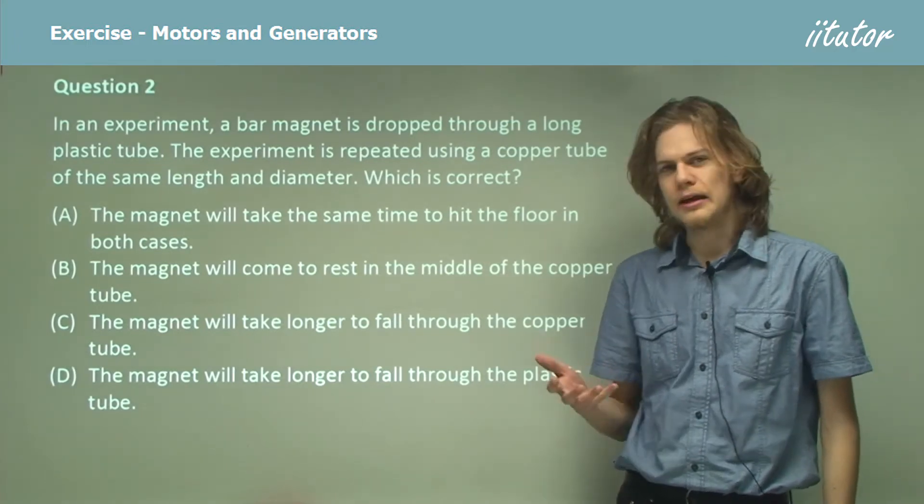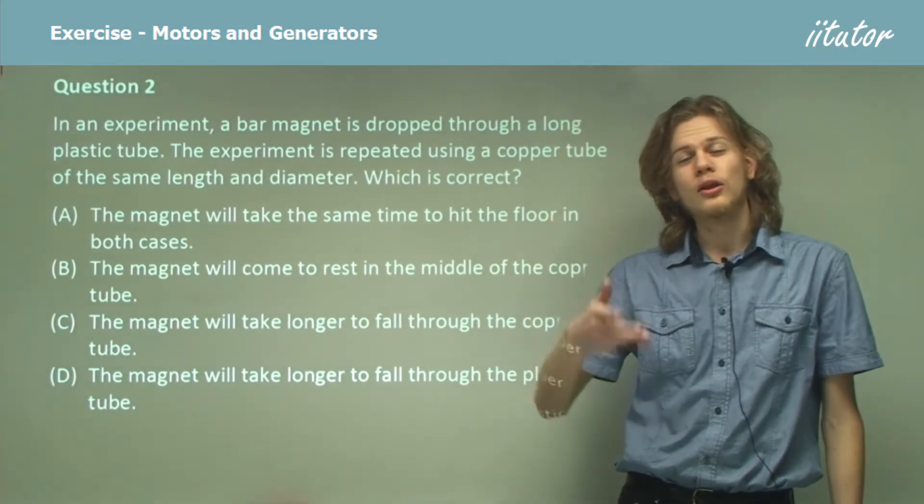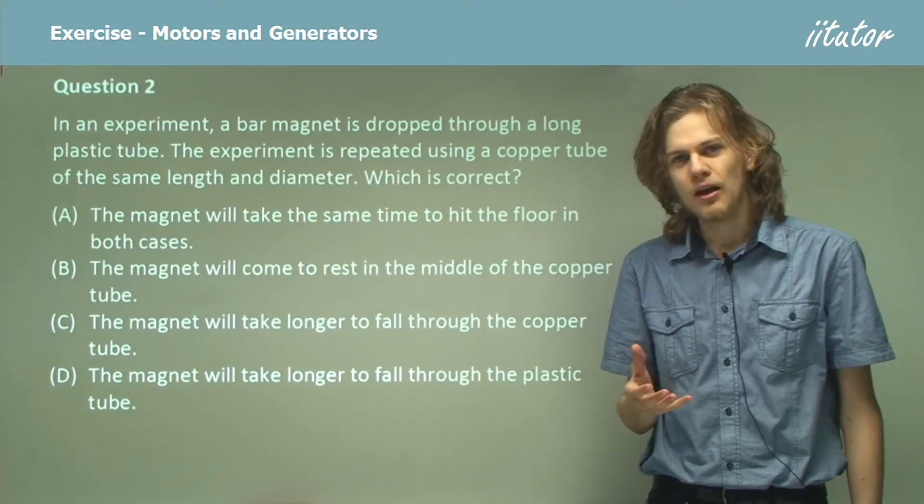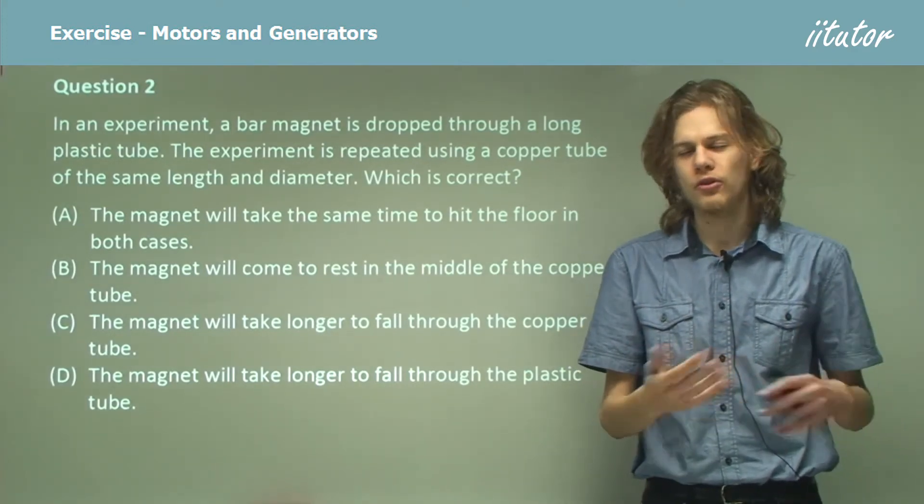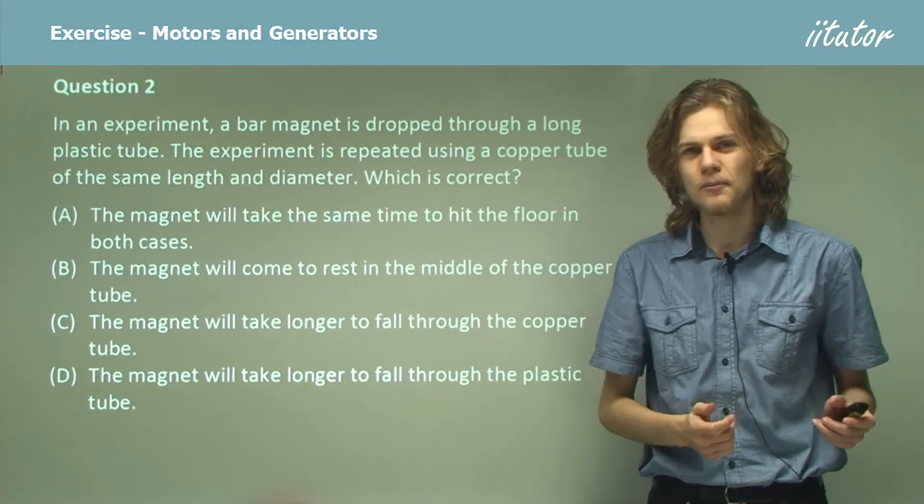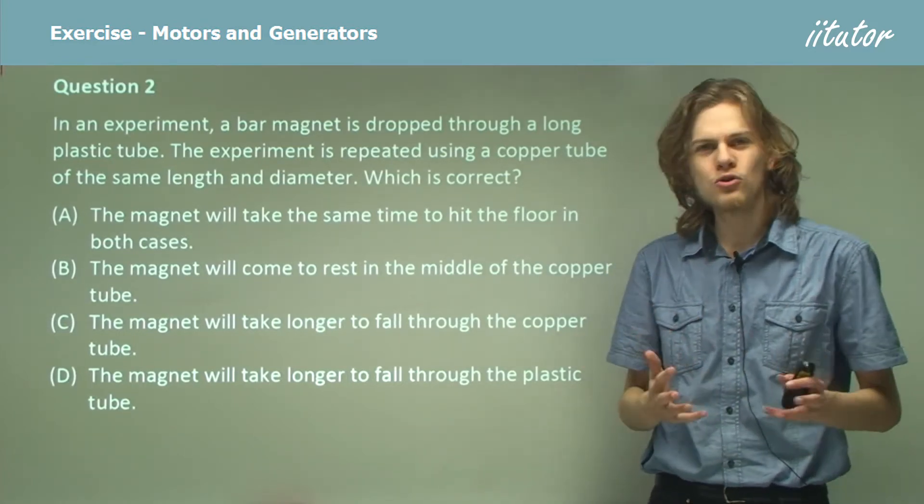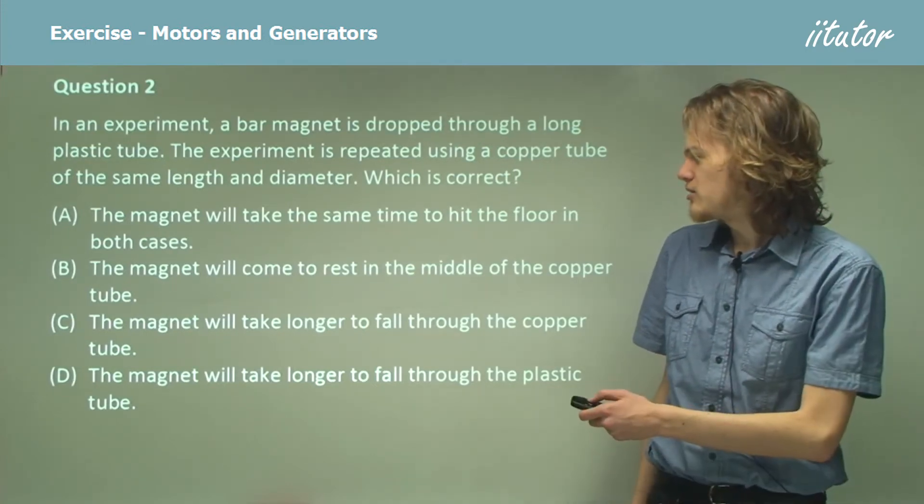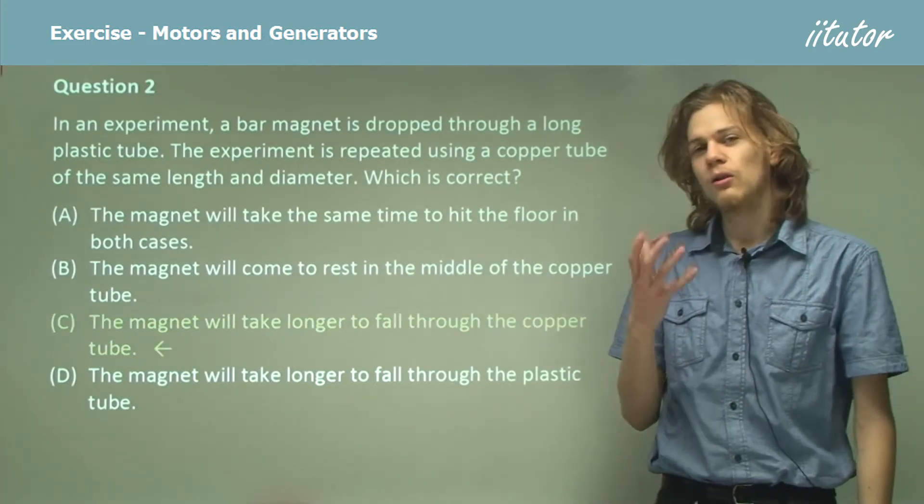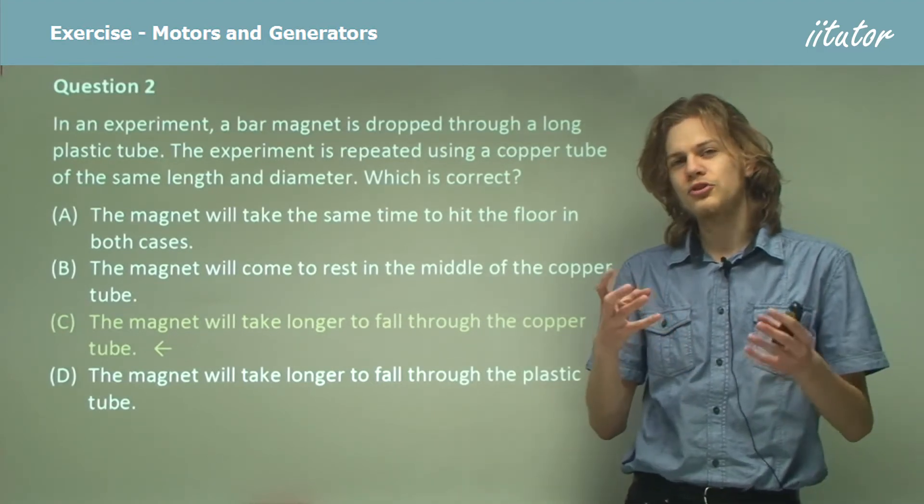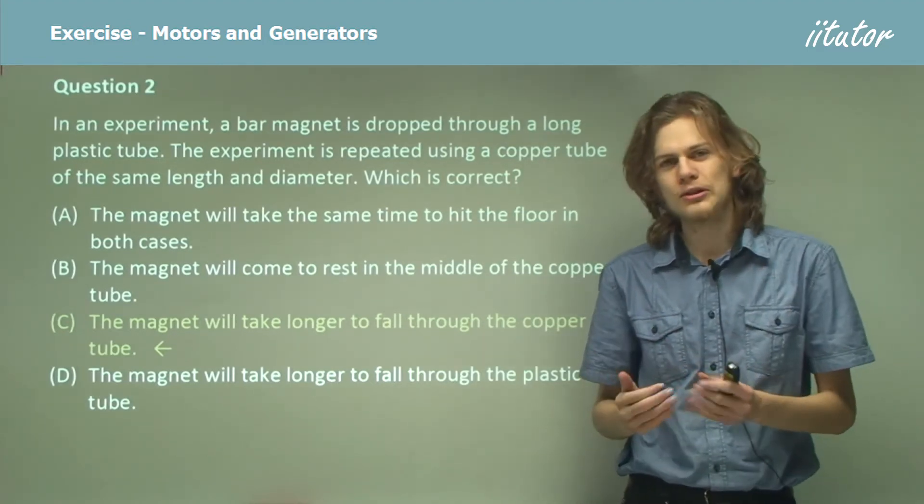Well the answer here is that as the magnet is falling through the copper tube, it will produce eddy currents in the metal. That won't happen for the plastic tube because plastic is an insulator. These eddy currents will produce a magnetic field that will resist the motion of the magnet. So the correct answer is, the magnet will take a longer time to fall through the copper pipe because the copper pipe produces a magnetic field that opposes its motion.